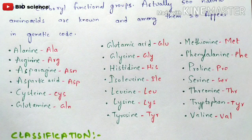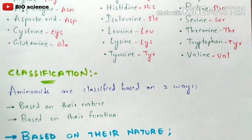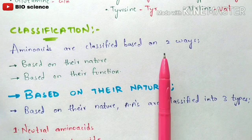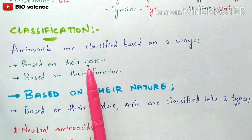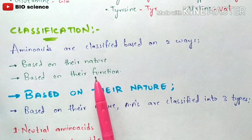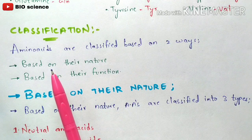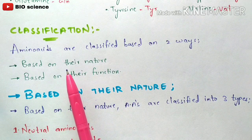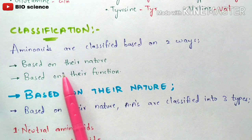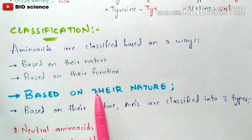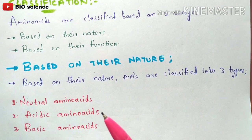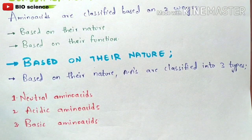Now let us see the classification of amino acids. These amino acids can be classified in two ways: based on their nature and based on their function. So firstly, let us see how amino acids can be classified based on their nature. Based on their nature, amino acids are classified into three types: neutral amino acids, acidic amino acids, and basic amino acids.